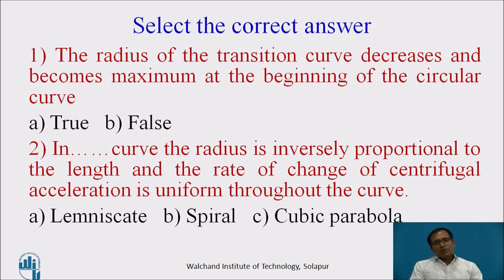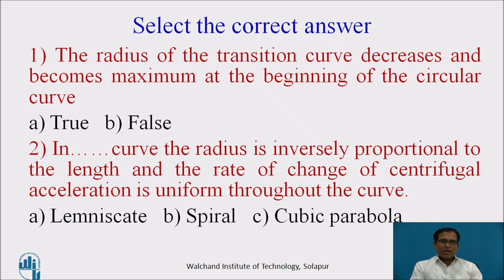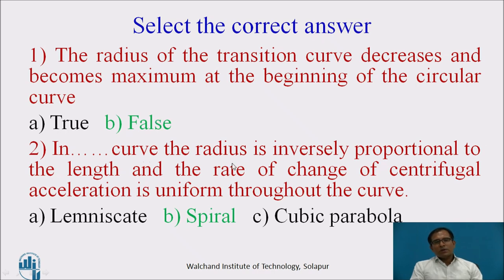With the previous class understanding, pause the video and answer these two questions. First: the radius of a transition curve decreases and becomes maximum at the beginning of a circular curve — is it true or false? Second: in which curve is the radius inversely proportional to the length and rate of change of centrifugal acceleration uniform throughout — lemniscate, spiral, or cubic parabola? The correct answer to the first is false, because the radius is minimum, not maximum, at the beginning of the circular curve. The spiral fulfills the ideal shape of the transition curve.